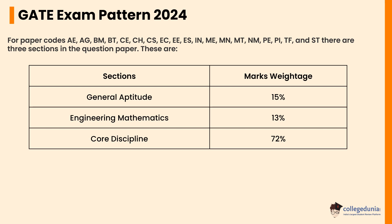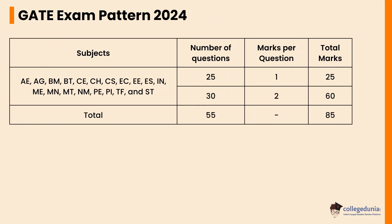For the papers with codes AE, AG, BM, BT, CE, CH, CS, EC, EE, ES, IN, ME, MN, MT, PE, PI, TF, and XE, 15 percent weightage is given to General Aptitude, 13 percent to Engineering Mathematics, and the remaining 72 percent to the subject paper. Apart from 10 questions in the General Aptitude section, there will be 55 questions from core discipline and Engineering Mathematics with a total of 85 marks.